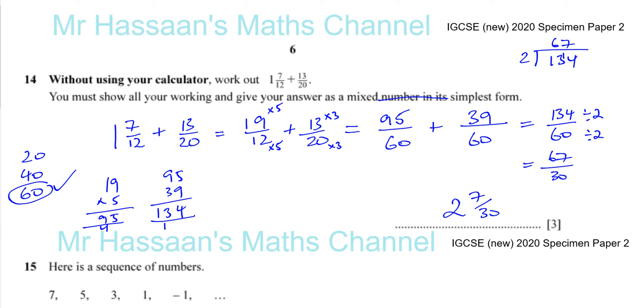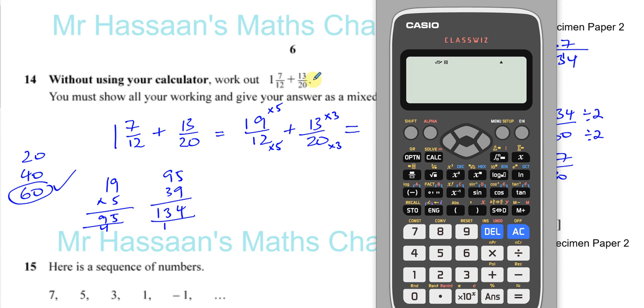Go to the original question that you were given and don't go to what you wrote down in case you wrote it down incorrectly. Put this in your calculator: 1 and 7/12 plus 13/20, and you can check to see the answer comes out as 67/30.